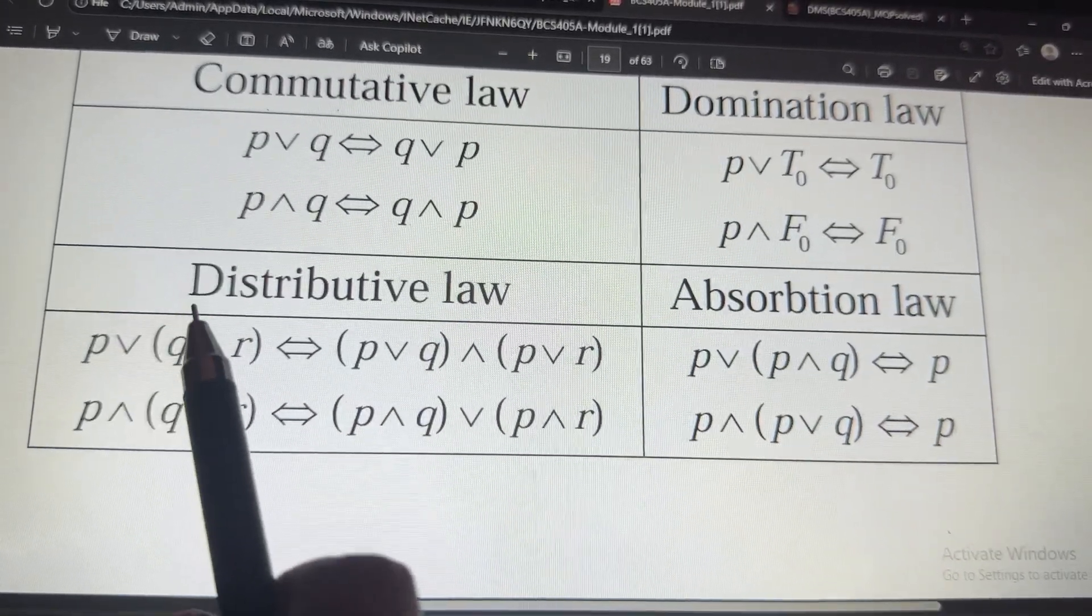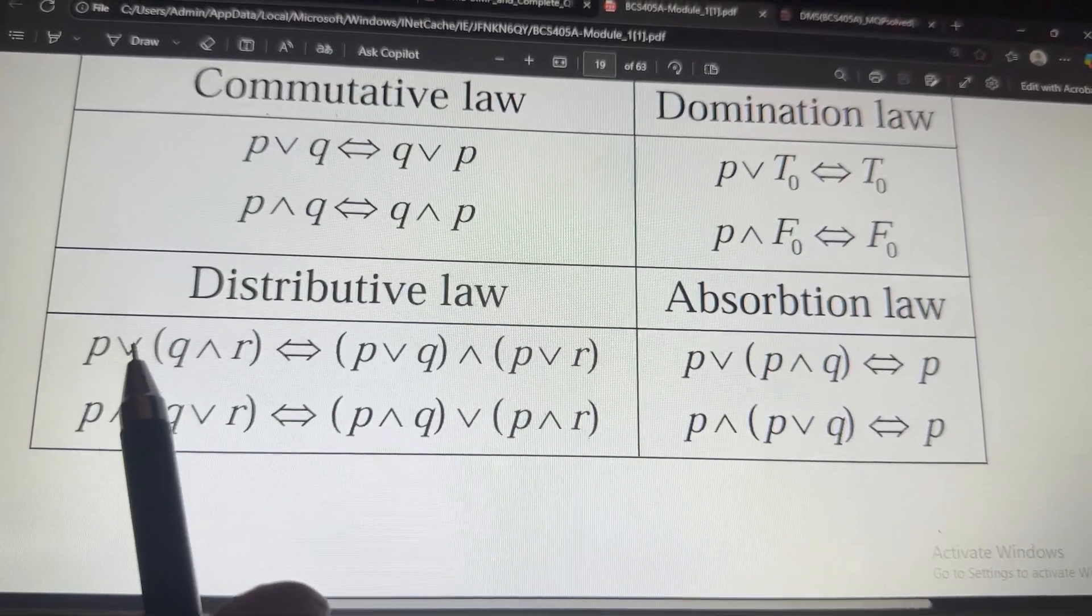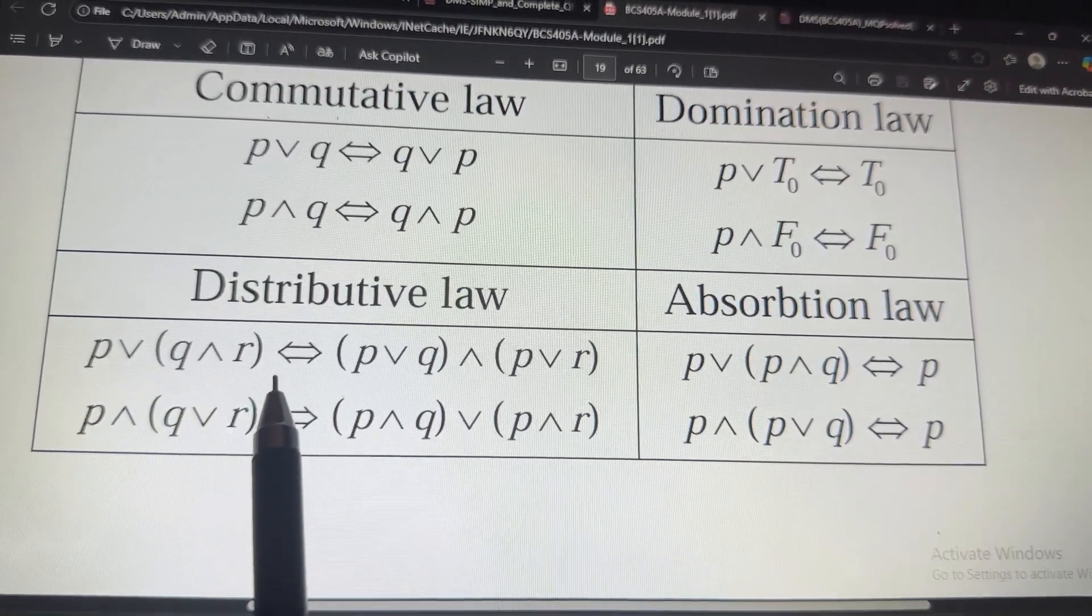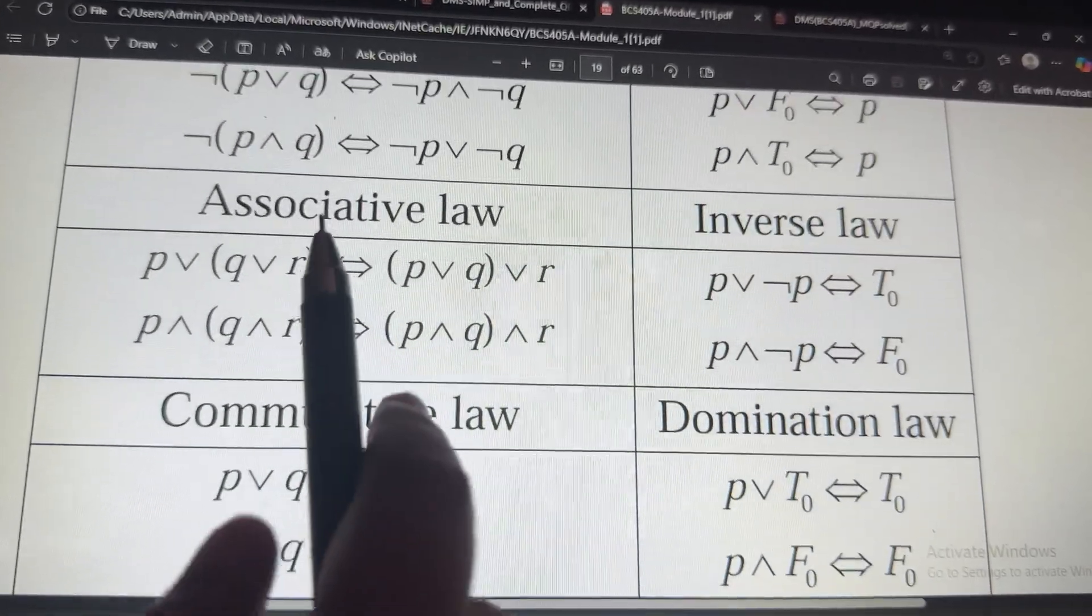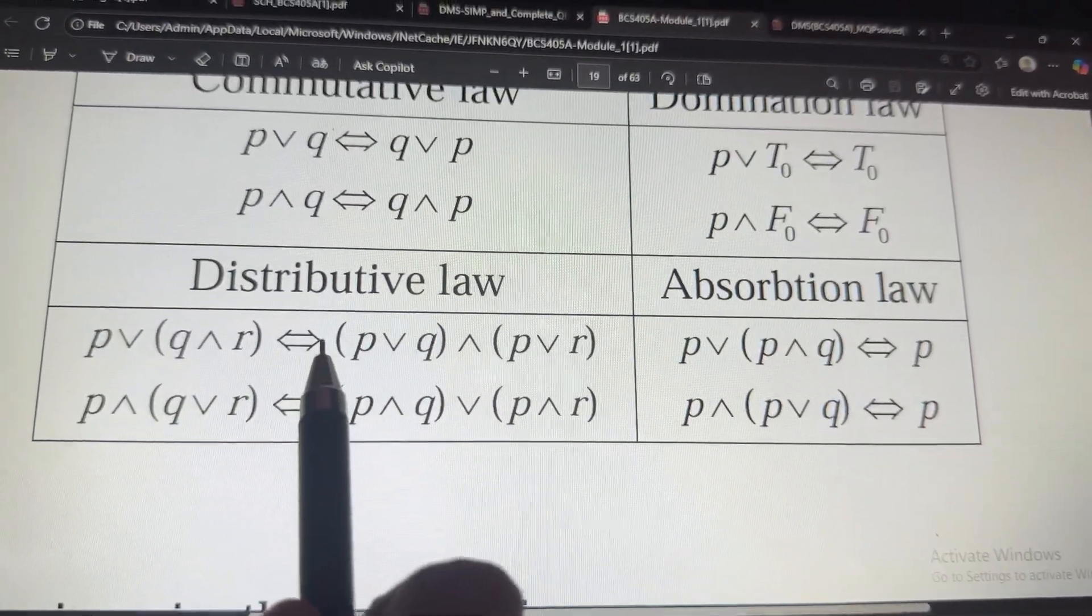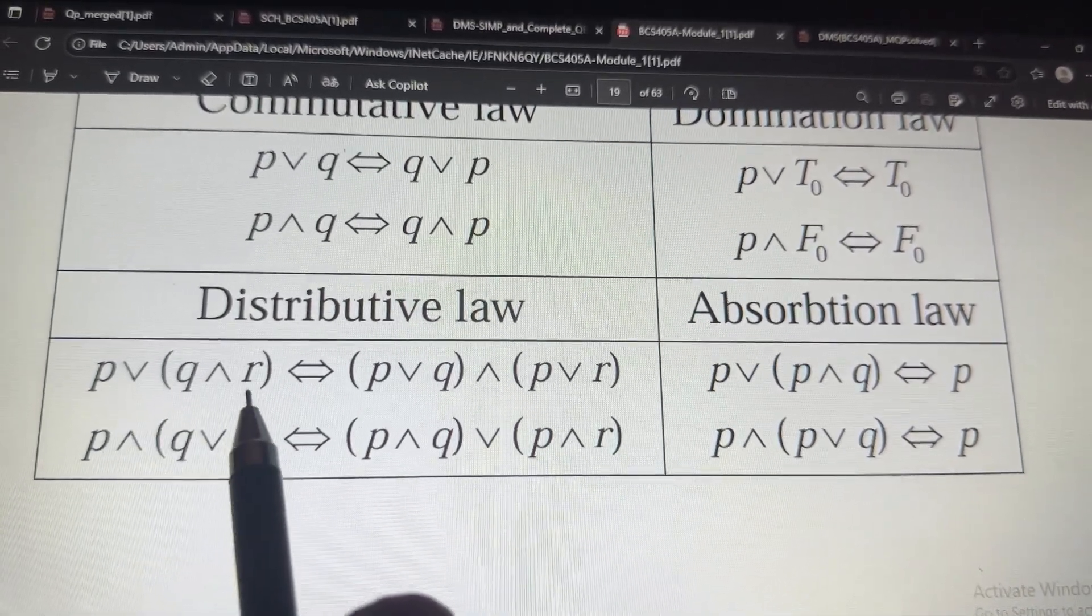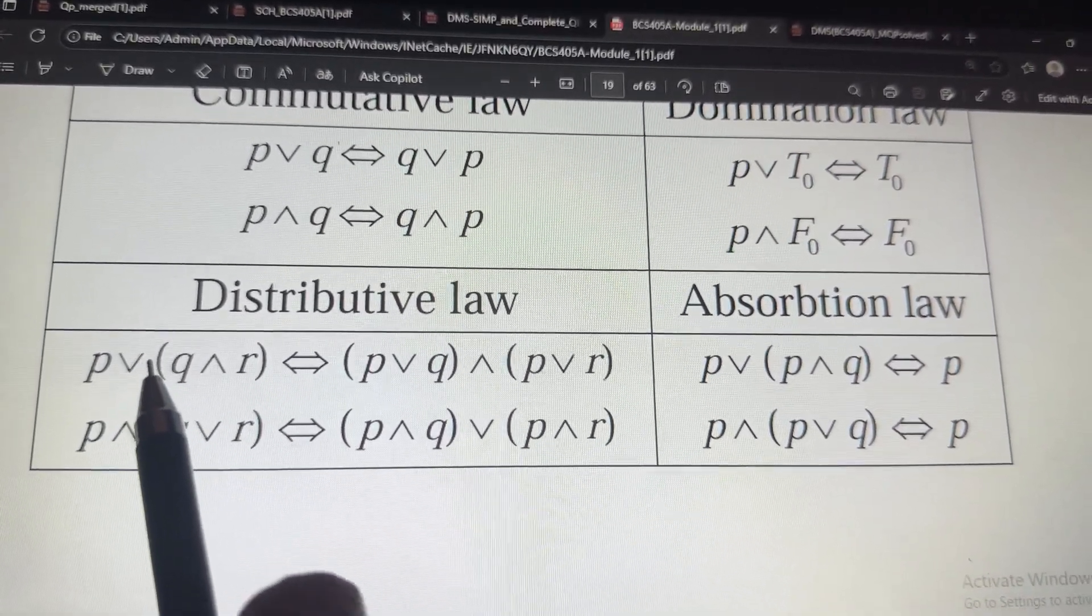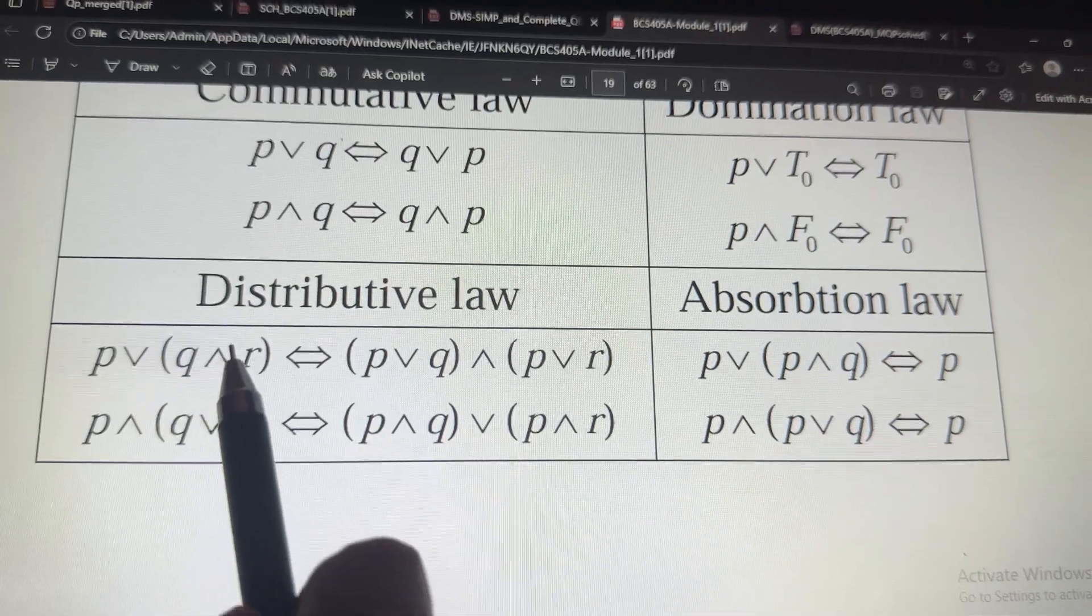Then we have distributive law, where again we are using the same three letters. Remember, in associative law, we have same symbol, but in case of distributive law, we will have different symbols. You can see that R and.